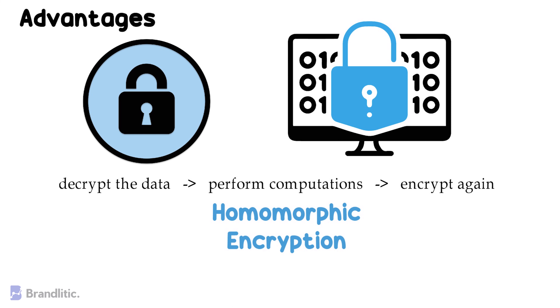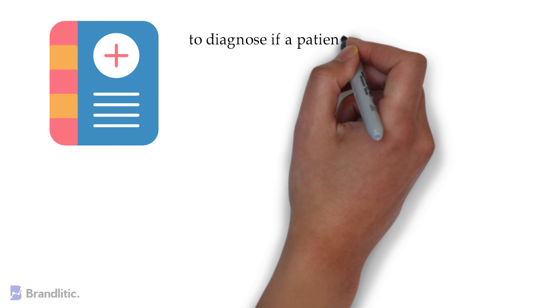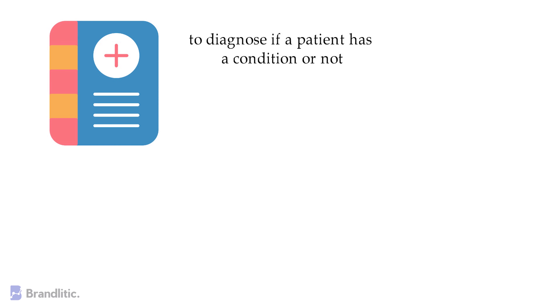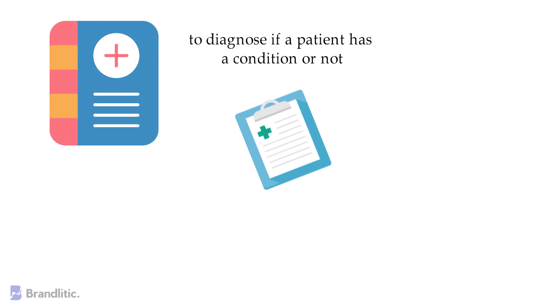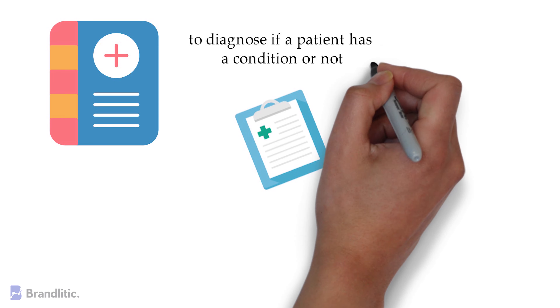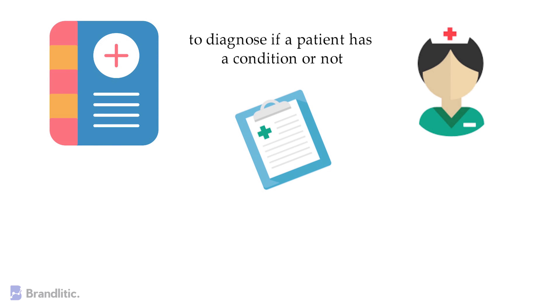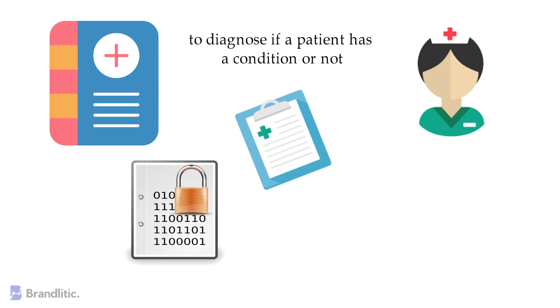A more practical example would be a system or service that processes medical information in order to diagnose if a patient has a condition or not. The data we'd be sharing probably includes very sensitive information about a patient's medical history — something we want to ensure won't be accessible to anyone apart from authorized personnel. By using homomorphic encryption, the system or service can process the required computation on encrypted data, returning the result of the diagnosis without knowing which information is being processed.